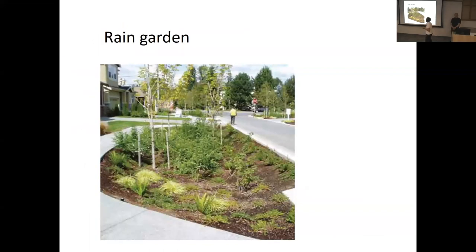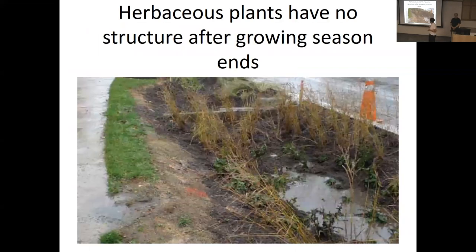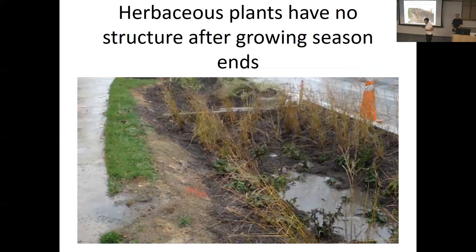Rain gardens — these depression areas take in water and hopefully infiltrate it into the ground. There are a lot of herbaceous plants, and the problem is that in wintertime the plants just have no structure and you have to cut them back — it's just a muddy hole. We tend to use woody plants that have structure in the winter and don't collapse. People do use herbaceous plants and they make a good summer show, but winter is a problem and you better have maintenance.